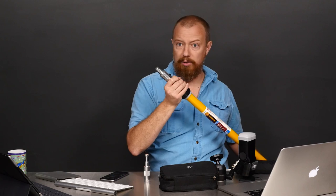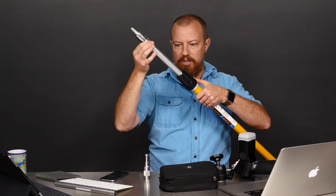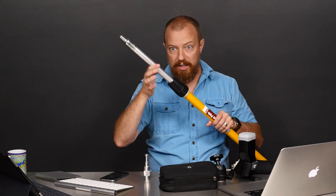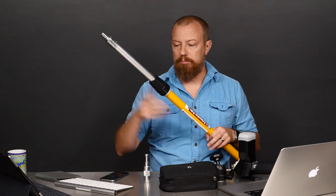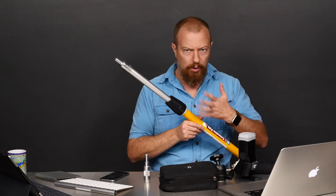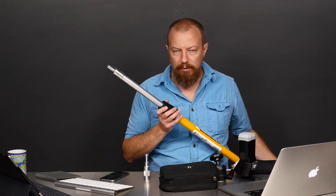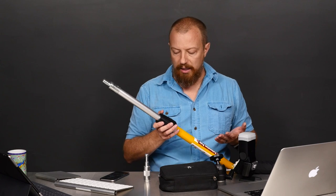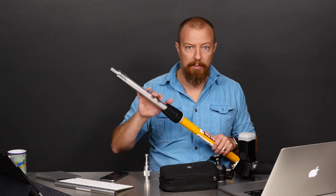These monstrous threads on here that are standard on these extension poles. This thing extends. So, this loosens, this extends out, then you lock that down and you get it at the height that you want. This particular pole is 6 to 12 feet. So, closed 6 feet, open 12 feet, obviously anywhere in between. And they get, you can buy them considerably longer. You can also buy shorter ones.